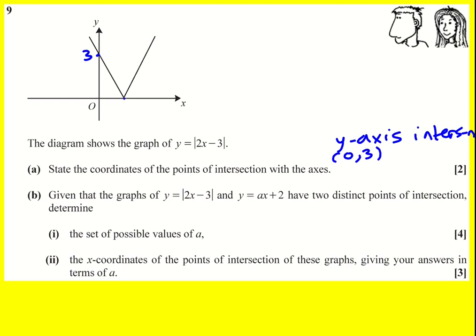And then this one here is when y is 0, so when 2x minus 3 equals 0, therefore x is 3 over 2. It's like when you solve a quadratic equation and factorize it. Okay, that's a good start.